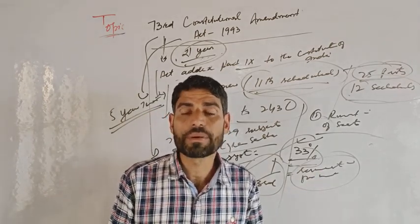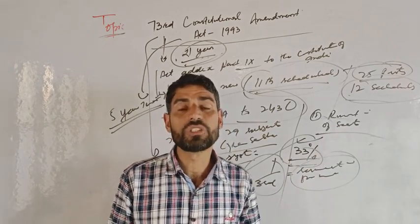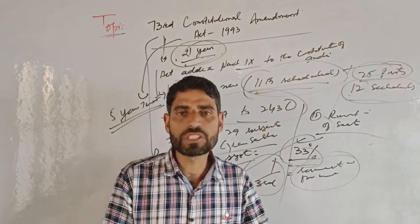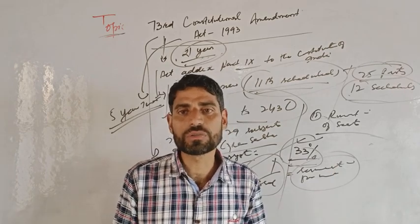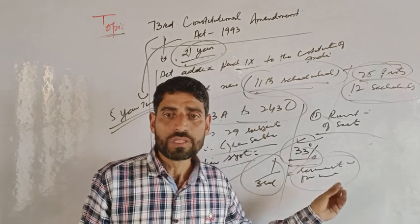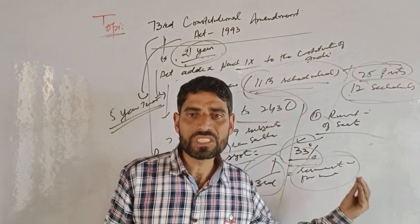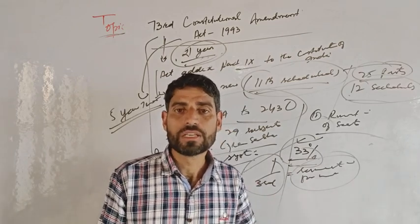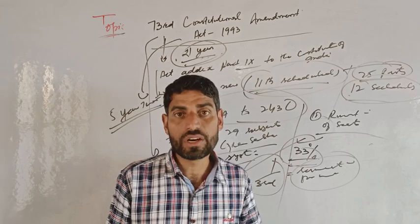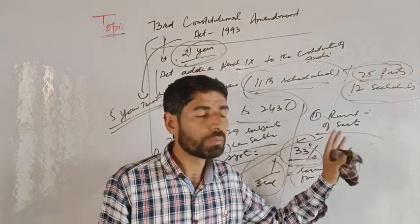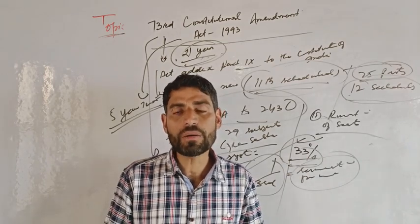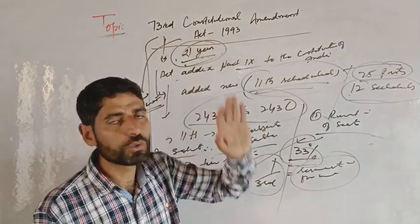The Governor of the state shall, after every five years, constitute a State Finance Commission to review the financial position of the panchayats. The commission determines taxes, duties, tolls, and fees that may be assigned to the panchayats, as well as grants-in-aid to panchayats from the Consolidated Fund of the State.